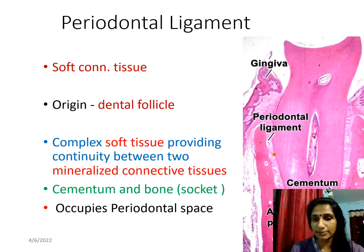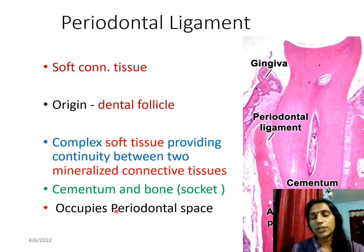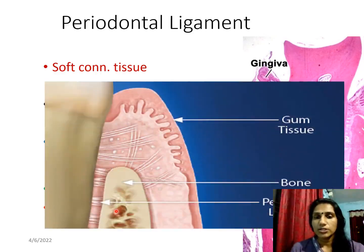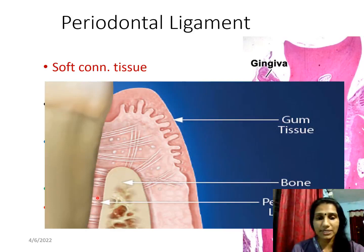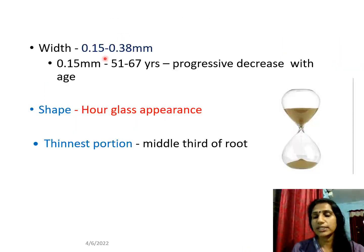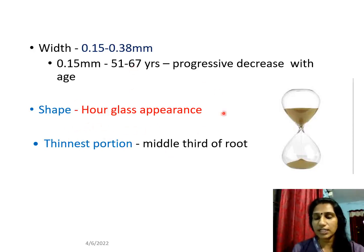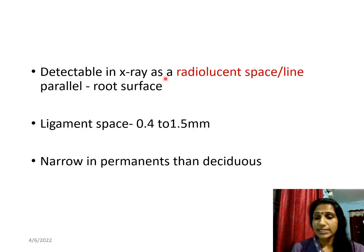Looking at the picture, this is your periodontal ligament — it has bone on one side and the small dark pink is cementum. It attaches both cementum and bone and occupies the periodontal ligament space. The width of the periodontal ligament is between 0.1 to 0.38 millimeter, and as age increases the width decreases. It has the shape of an hourglass — thin at the mid-root or middle third of the root.